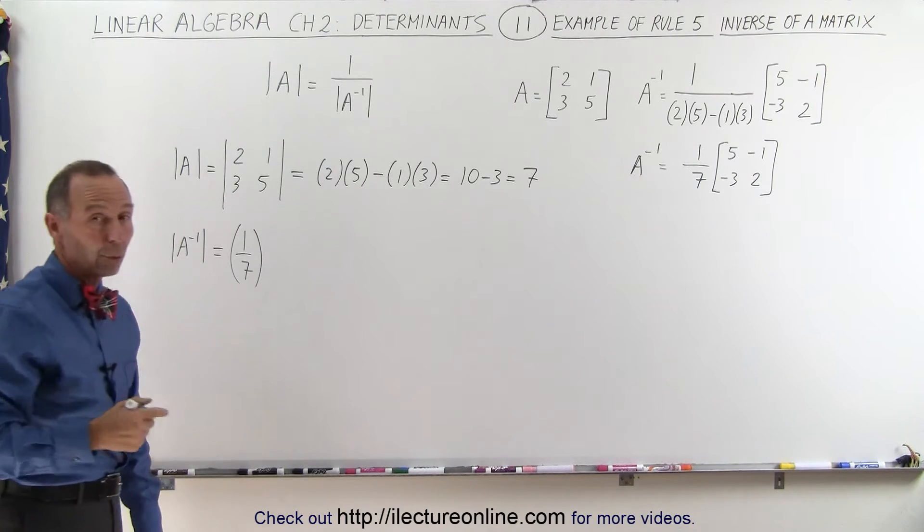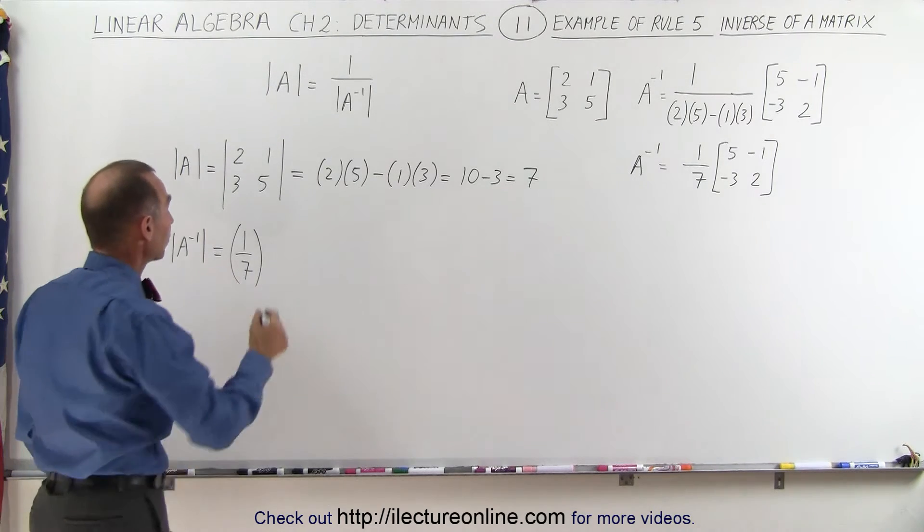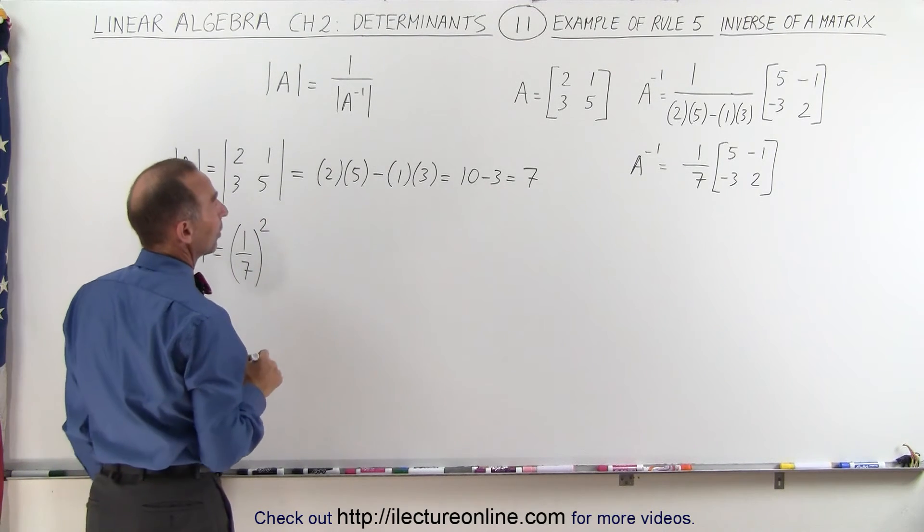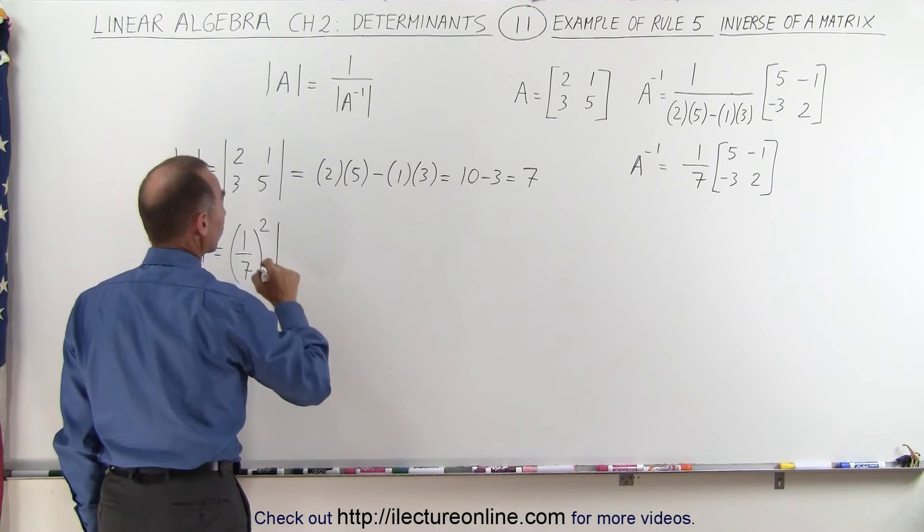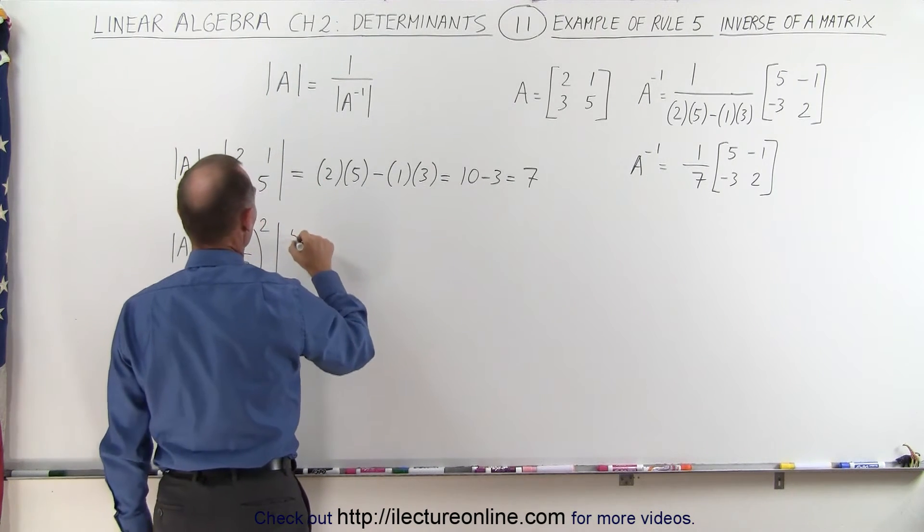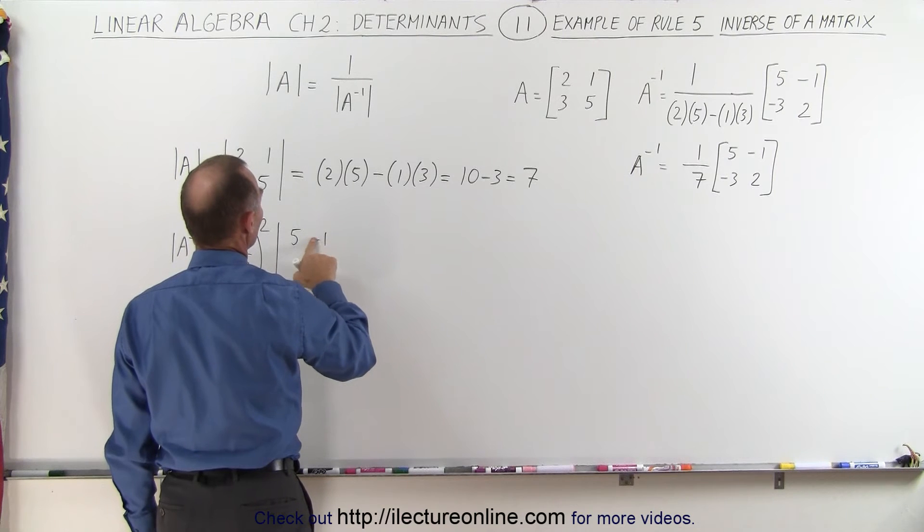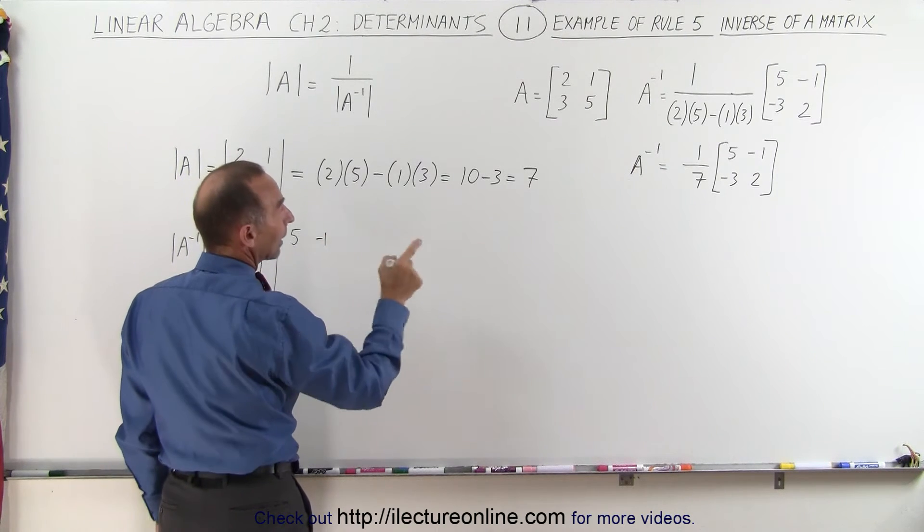Times the determinant of that matrix: 5, negative 1—this is negative 1 here—and negative 3 and 2.